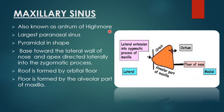Coming on to the maxillary sinus, it is also known as the antrum of Highmore, and it is the largest paranasal sinus. It is pyramidal in shape, with its base — the base of the pyramid — towards the lateral wall of the nose, and the apex directed laterally into the zygomatic process. Its roof is formed by the floor of the orbit, and its floor is formed by the alveolar part of the maxilla.